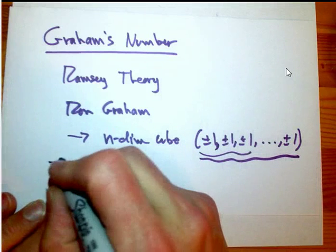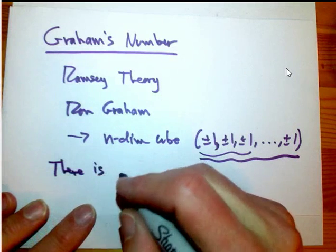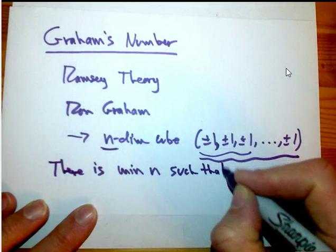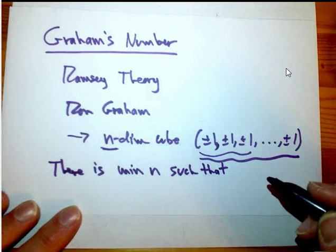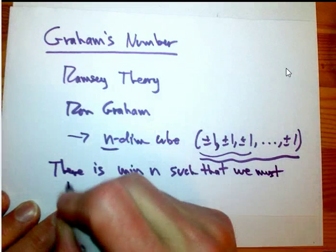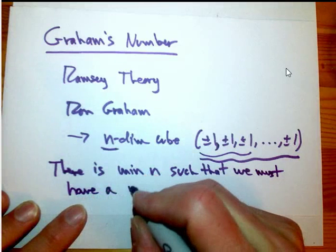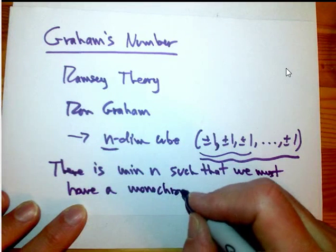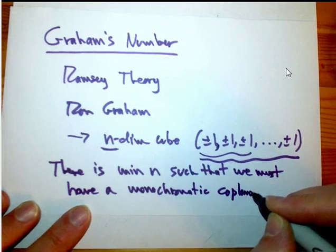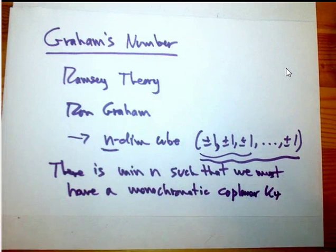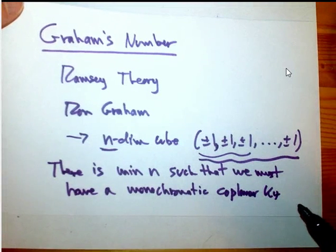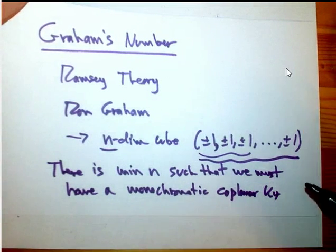And then you just have to figure out whether you've created a red interconnection between four of these vertices that's coplanar. It's not hard to define what coplanar means just in terms of the coordinates. So the claim is there is some minimum n — which is the dimensionality — beyond which you must have a monochromatic, either all red or all blue, coplanar K4. Don't get tripped up in the details. It's just a particular Ramsey theory problem. I should look up deeper and see what the application would be, because lots of graph theory is really important for interconnecting the internet — network theory, stuff like that.